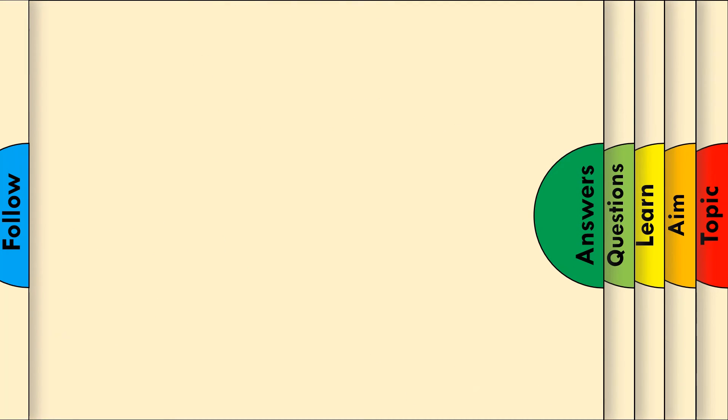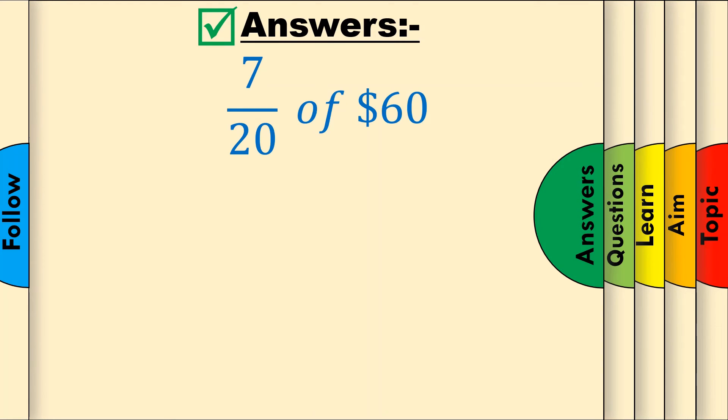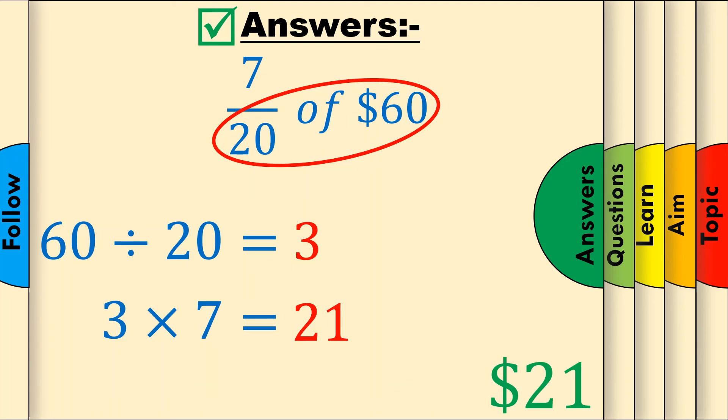Question 2. 7 over 20 of $60. Using our method, you should get 21 as the answer. $21.